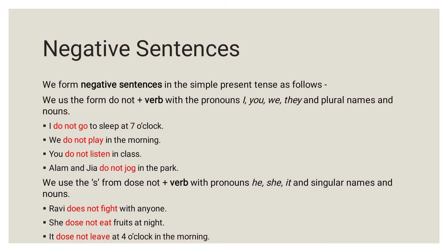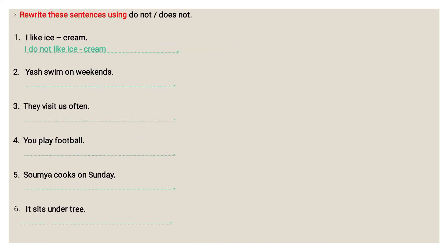Now let's move to the exercise: rewrite the sentences using 'do not' and 'does not.' First: 'I like ice cream' — with 'I' we use 'do not,' so the answer is 'I do not like ice cream.' Second: 'Yash swims on weekends' — Yash is a singular name, so we use 'does not': 'Yash does not swim on weekends.'